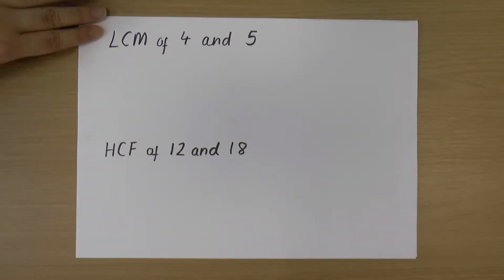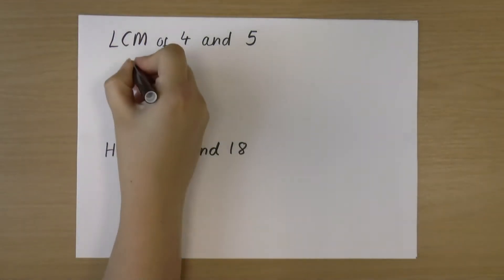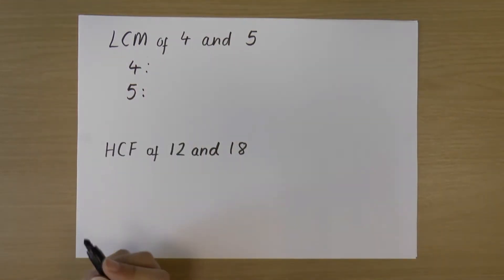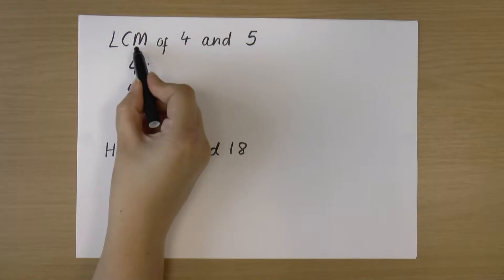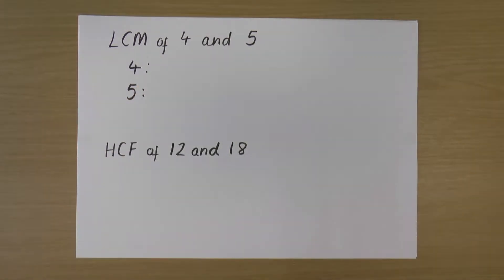It's asking for the Lowest Common Multiple of 4 and 5. So the first thing I'm going to do is find the multiples of 4 and 5. We're being asked about multiples of these numbers.